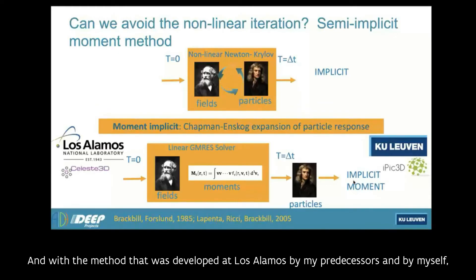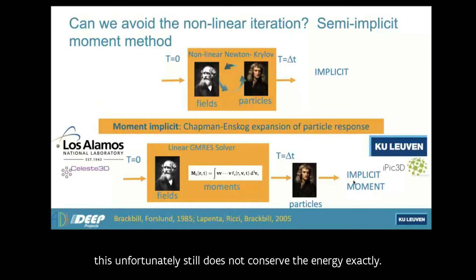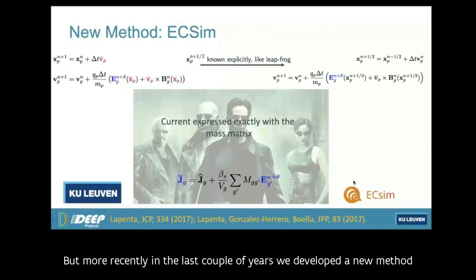With the method that was developed at Los Alamos, by my predecessors, by myself, this unfortunately still does not conserve the energy exactly, but it improves the constraints very significantly. This is the approach that is behind iPIC3D. But more recently, in the last couple of years, we developed a new method that describes this contribution of the particles to the grid exactly. There is no longer any approximation. It does it exactly using a mathematical concept called mass matrix.